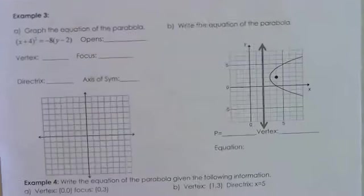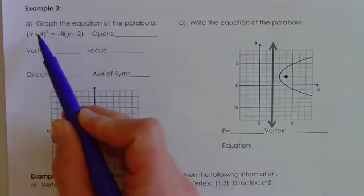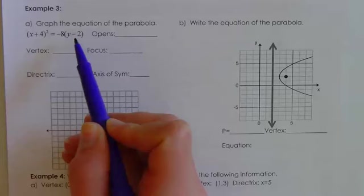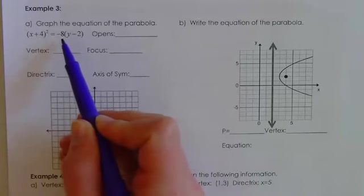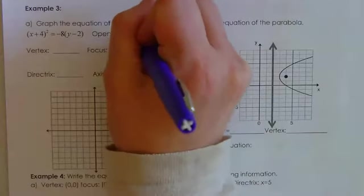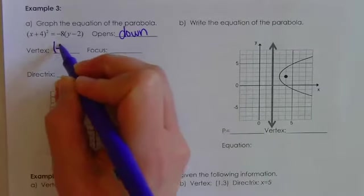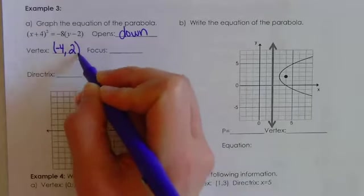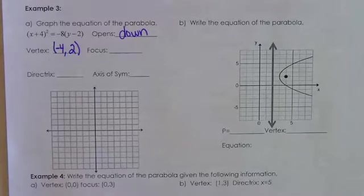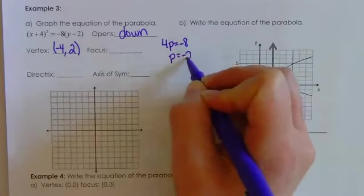Let's graph a parabola that is not centered at the origin. I have values inside the parentheses with my x and y. My 4P value is negative 8, so this is going to open either down or to the left. Because it's with the y, it's going to be opening down. The vertex comes from the opposite sign: if I have x plus 4, the x value is negative 4; if I have y minus 2, the y value is 2. Taking 4P equals negative 8, P equals negative 2 — matching that downward direction.